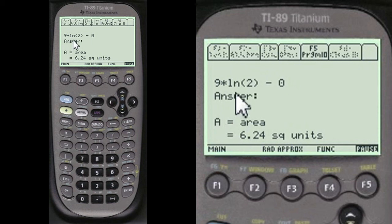The upper limit from the lower is this minus the 0. And so this is the answer also, but when you work it out, it comes up to 6.24 square units.